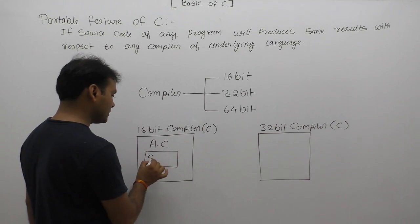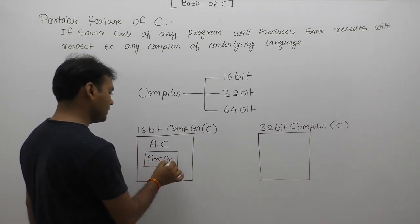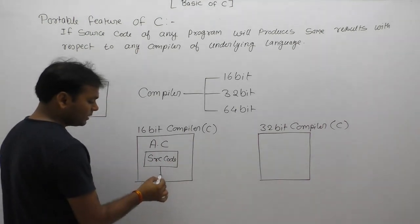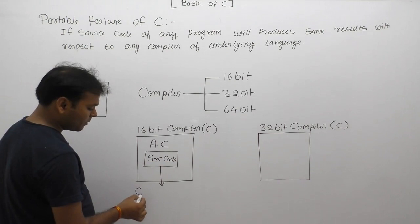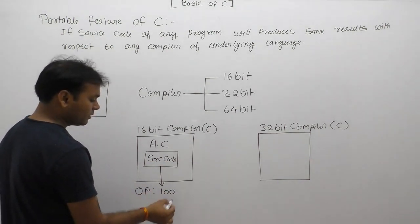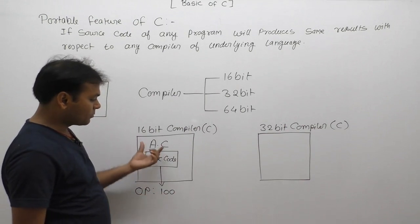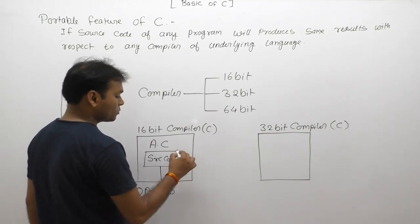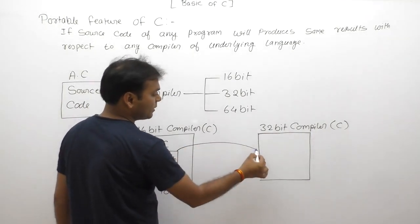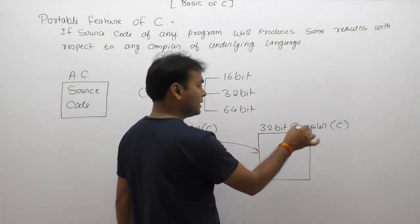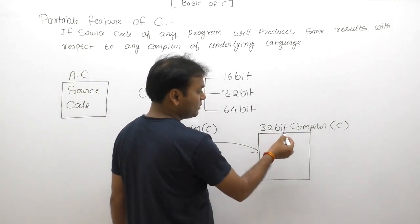We are writing some instructions in source code format. Suppose that after executing this source code it gives you some output or result, like 100. We are assuming the output of this program is 100. Next, the same source code is used with a different type of compiler of the same programming language.